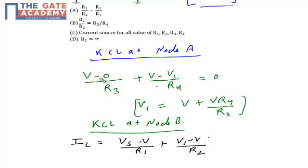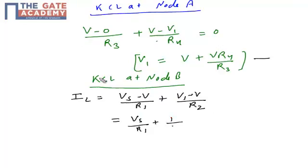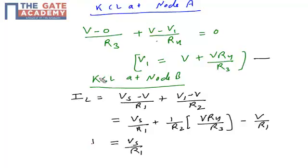If I put the value of V1 here from the above expression, it is further simplified as Vs by R1 plus 1 by R2 times V times R4 by R3 minus V by R1. You can simplify this as IL is equal to Vs by R1 plus V times R4 upon R2 R3 minus 1 by R1.